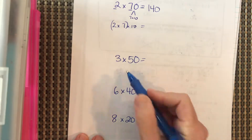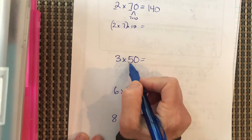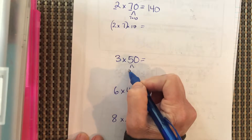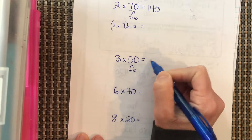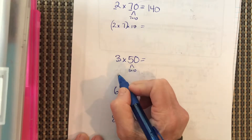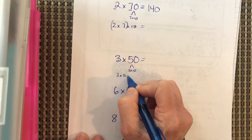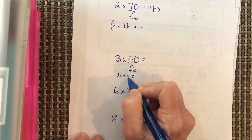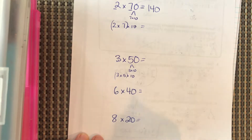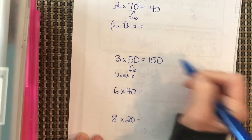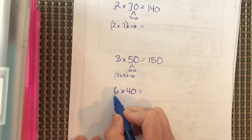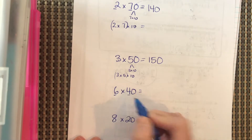Okay, pause it and try 3 times 50, then come back. For 3 times 50: 50 equals 5 times 10, so we have 3 times 5 times 10. Do 3 times 5 first, which is 15, then bring the zero over to get 150.